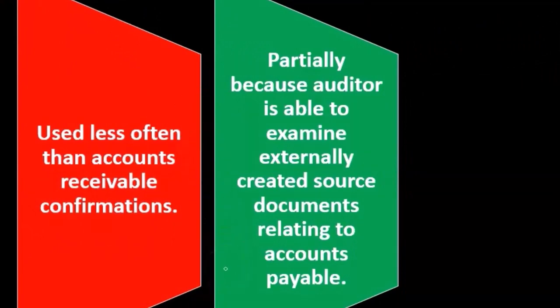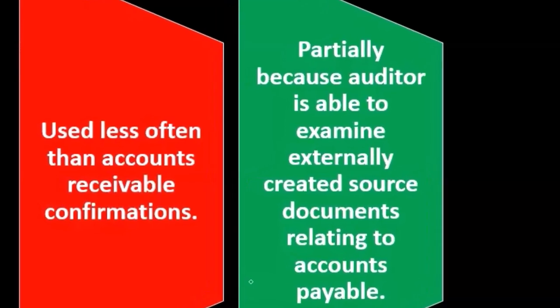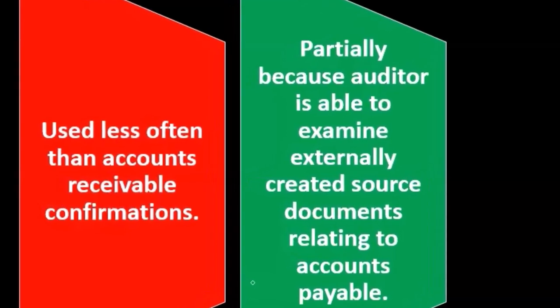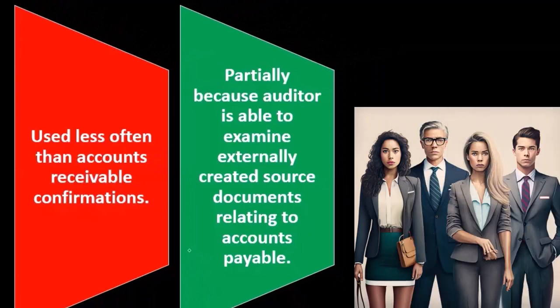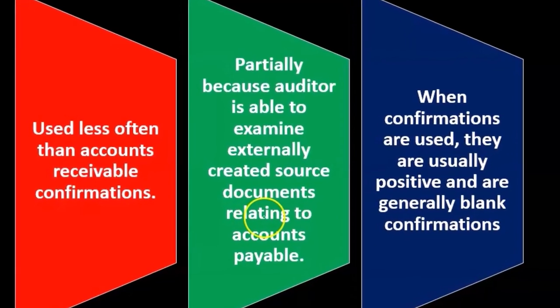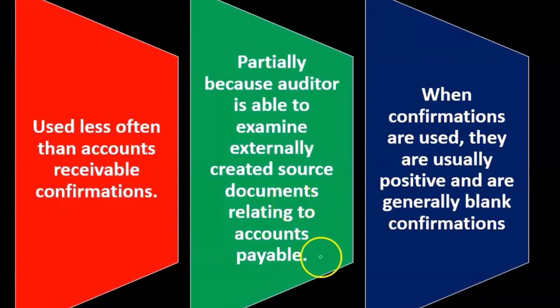AP confirmations are used less often partially because the auditor is able to examine externally created source documents related to accounts payable. In accounts payable, we have source documents that are not generated from inside the organization. By contrast, with accounts receivable, the source documents are generated by the company itself, making them less reliable. With accounts payable, we're looking at bills given from outside the organization, and therefore they are more reliable.